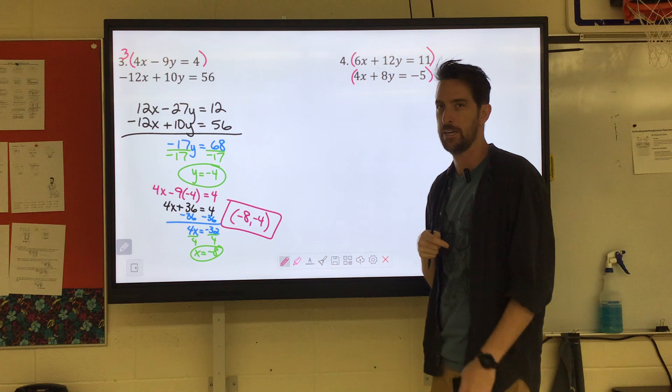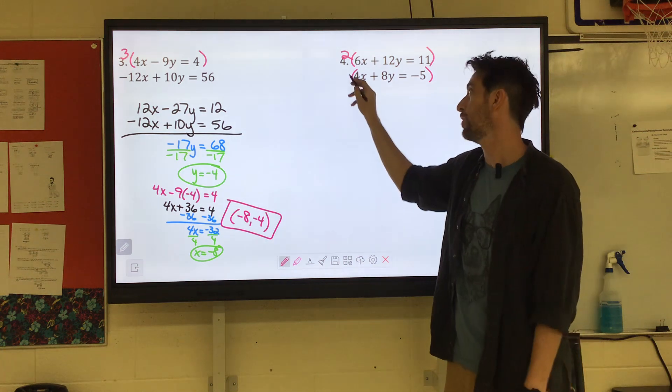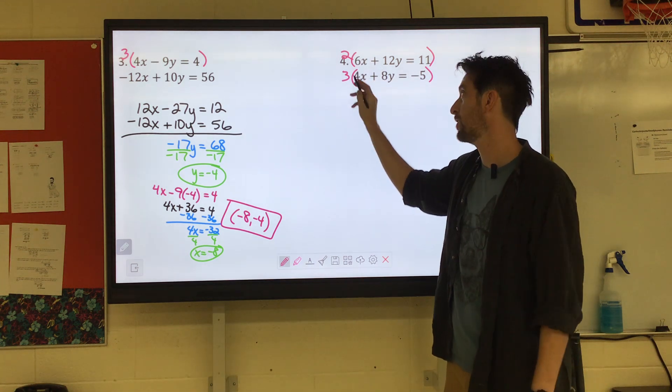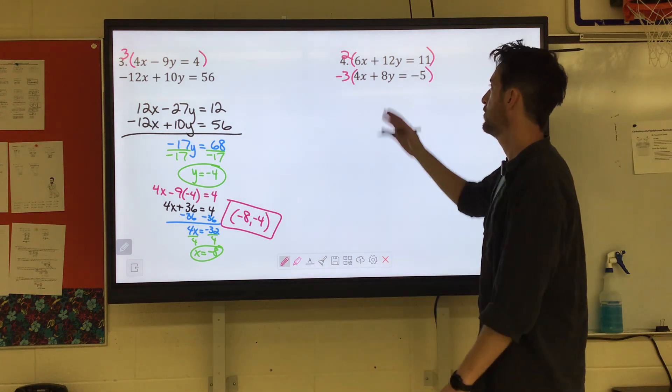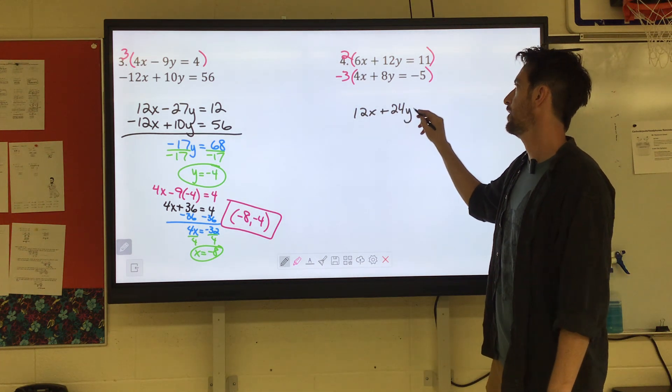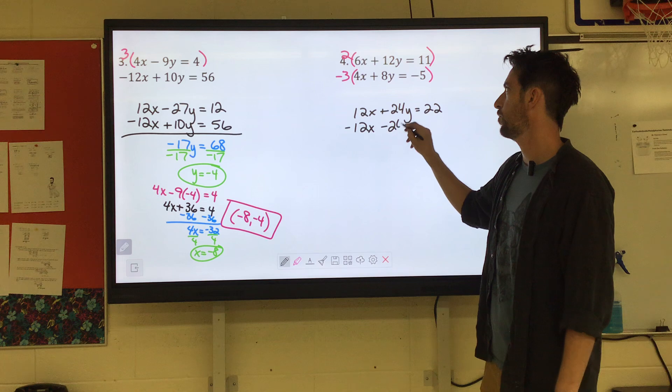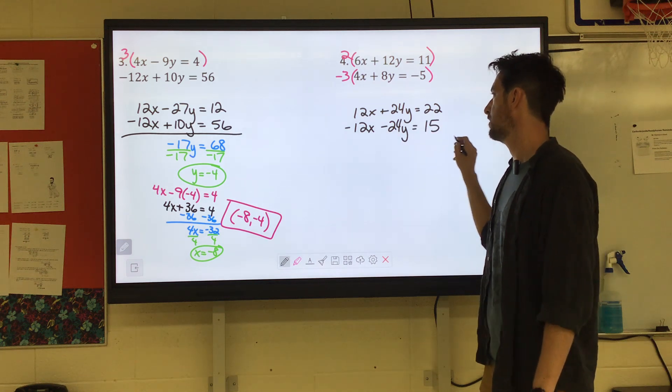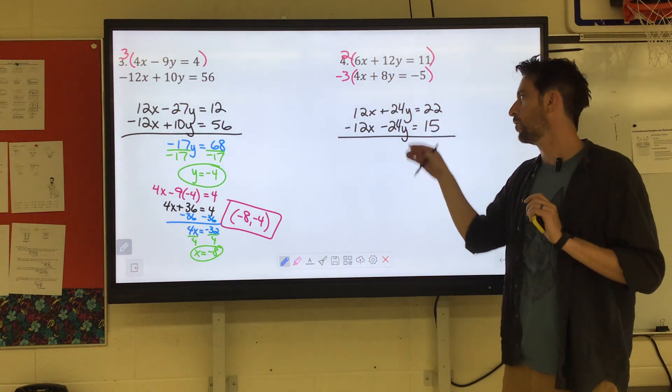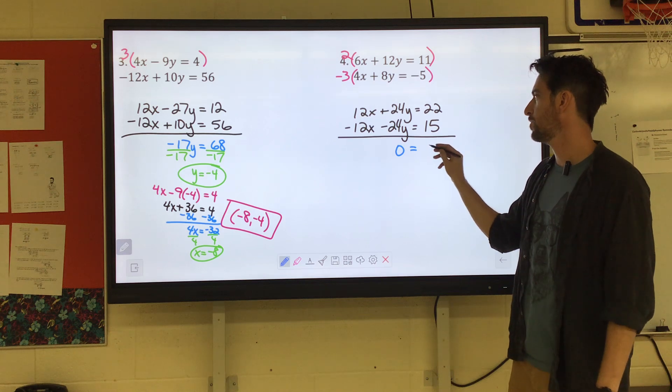To make this 6X 12X, you would multiply by 2. To make 4X 12X, you would multiply by 3. We do want one of them to be positive, one to be negative. They're both currently positive. There's an easy fix for that. So top line times 2 would be 12X plus 24Y equals 22. The second equation by negative 3 would be negative 12X, negative 24Y, and positive 15. So if we were to go straight down, 12X minus 12X, gone. 24Y minus 24Y, also gone. We have nothing left on the left side. Right side, 22 plus 15 is 37. Does 0 equal 37? No.